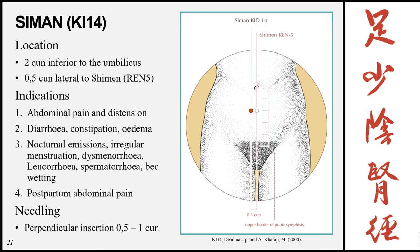Siman, Kidney 14, is located 2 cun inferior to the umbilicus, 0.5 cun lateral to the midline at the level of Shimen (Ren 5). Indications: abdominal pain and distension, diarrhea, constipation, edema, nocturnal emissions, irregular menstruation, dysmenorrhea, leukorrhea, spermatorrhea, bedwetting, and postpartum abdominal pain. Needling: perpendicular 0.5 to 1 cun.